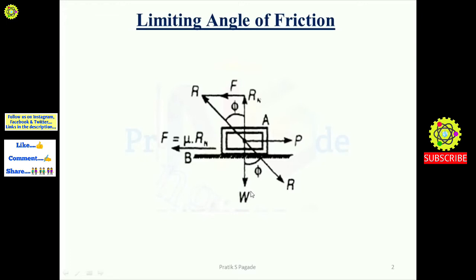When we apply a horizontal force P on body A, it remains stationary until the force P is greater than the friction force F. Friction force is given by F = μRN, where μ is the coefficient of friction and RN is the normal reaction. Normal reaction occurs opposite to the weight of the body.